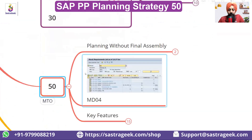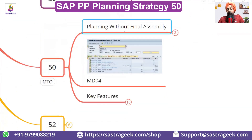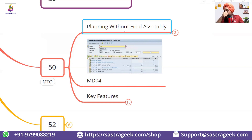Let's discuss what is Strategy 50. Strategy 50 is planning without final assembly. As the name itself says, we will be doing planning but without the final assembly. The final assembly we would be producing only at the last, when we actually get the sales order.